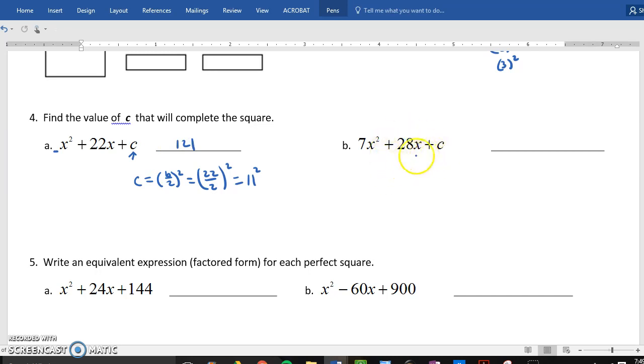Now, with this one, a lot of students made the mistake of just taking half of 28 and squaring it. But you've got to remember, you have a number in front here. So, we have to divide this up into seven squares. So, how many x squareds am I going to have in each? One. Easy way to find out what goes inside is divide these by seven. So, how many x's is each going to get? Four.